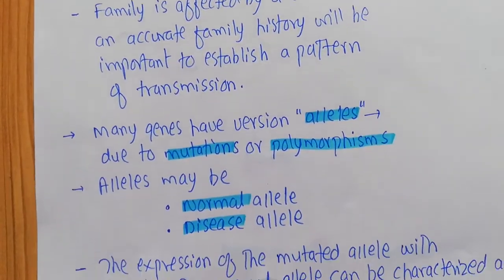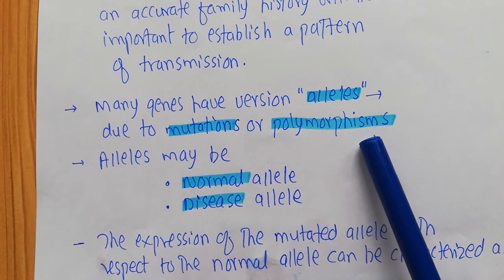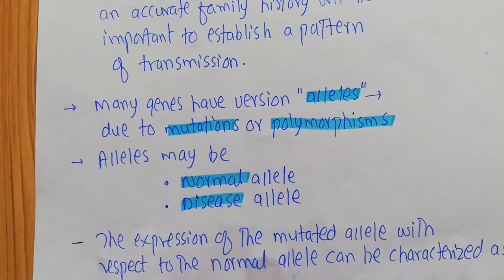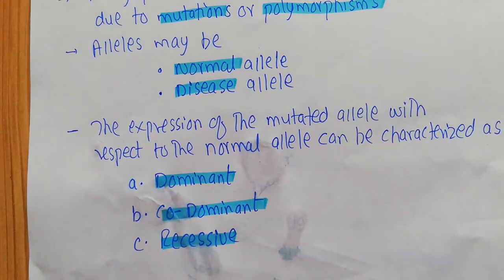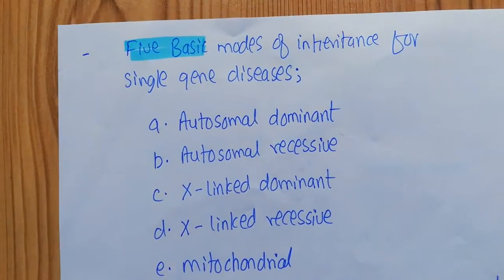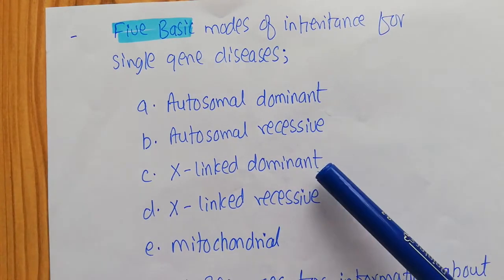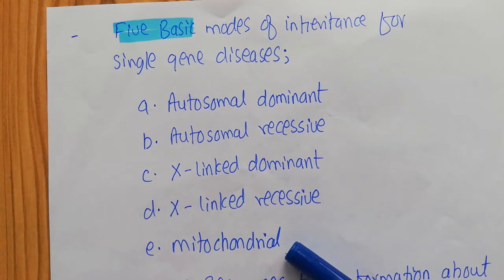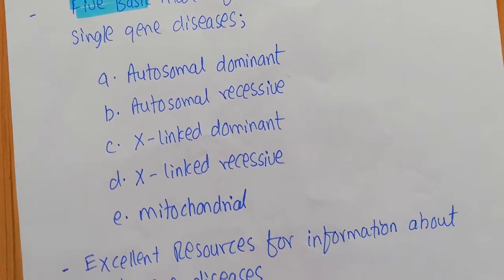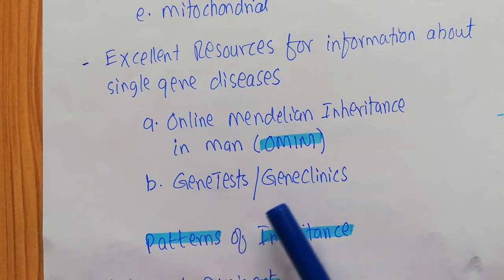I told you that genes can have different versions known as alleles, and these alleles may be due to mutations or polymorphisms. The alleles can be a normal allele or a diseased allele. The expression of the mutated allele with respect to the normal allele can be characterized as dominant, co-dominant, or recessive. There are five basic modes of inheritance for single gene diseases: autosomal dominant, autosomal recessive, X-linked dominant, X-linked recessive, and mitochondrial. Two excellent resources for information about single gene diseases are OMIM — the Online Mendelian Inheritance in Man — and GeneTests or GeneClinics.